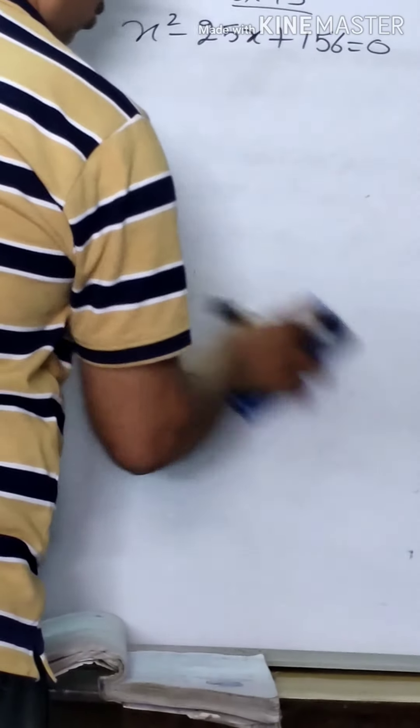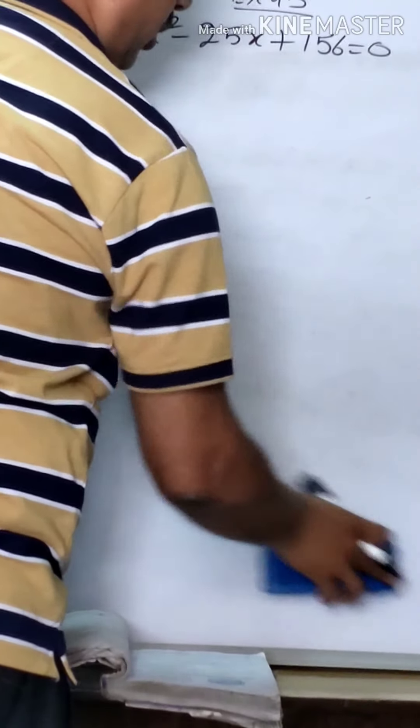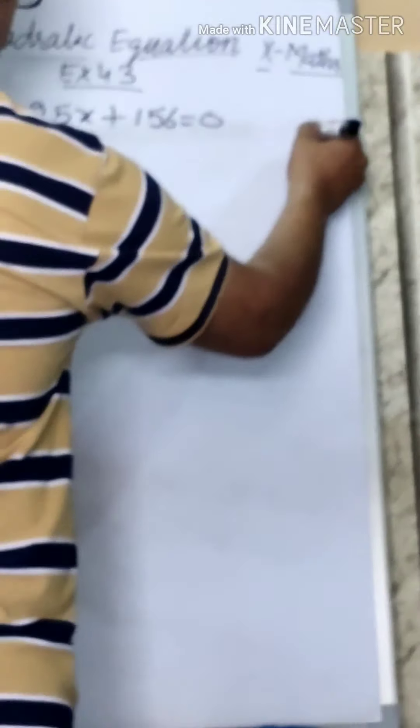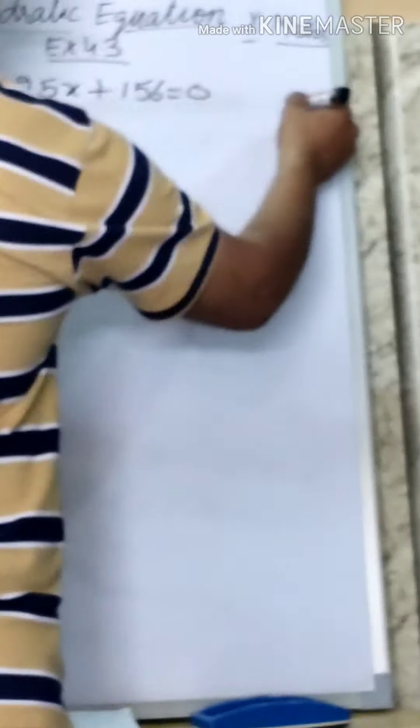If factorization is not possible, then use the D method. You can also check in this way whether factorization is possible.